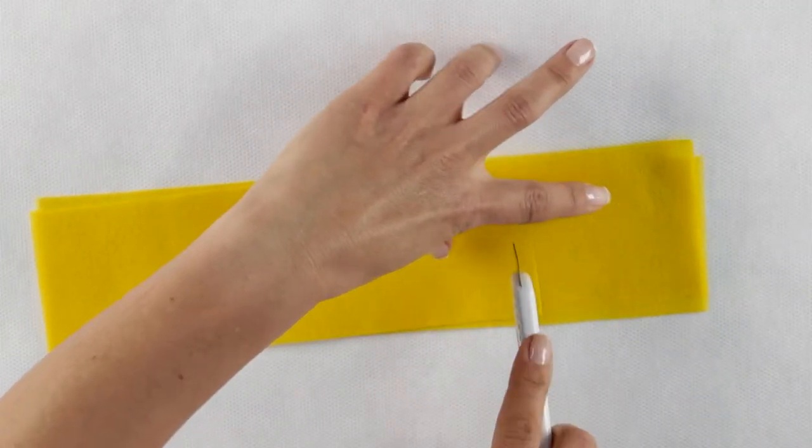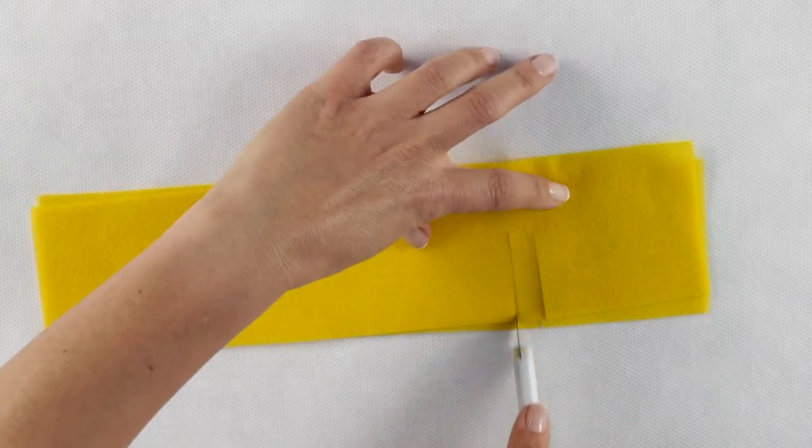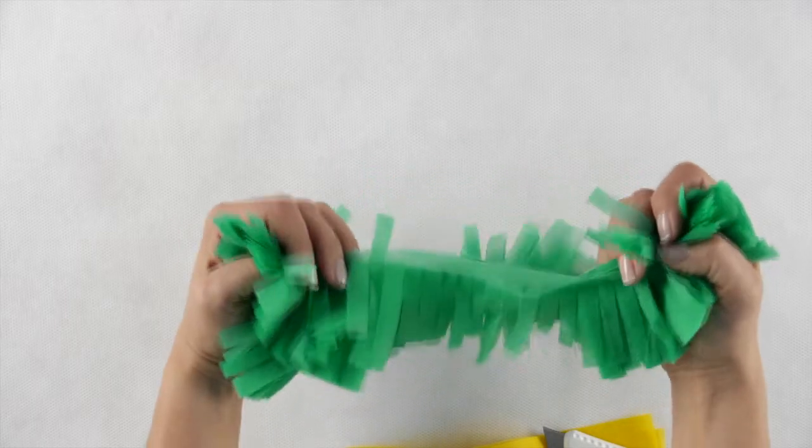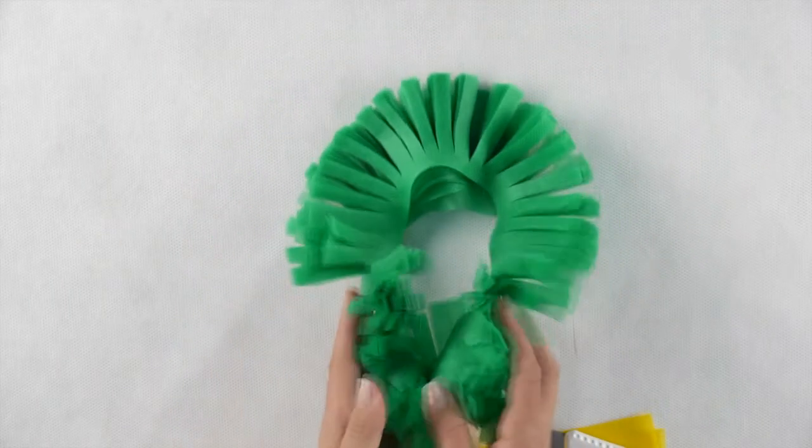Just place the SmartFab on the table, tense it slightly and cut. By the way, you can cut 10 to 15 layers of SmartFab at the same time.